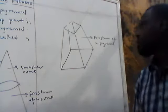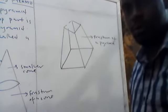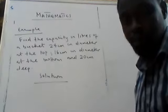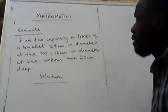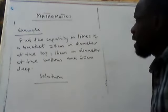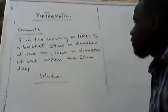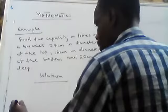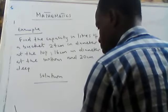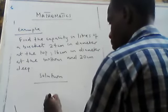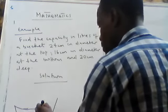Let's look at this example on the board: find the capacity in liters of a bucket 24 centimeters in diameter at the top, 6 centimeters in diameter at the bottom, and 20 centimeters deep. The bucket looks like this — let me draw it. When drawing diagrams, please use a pencil, not a pen, to keep your work neat.